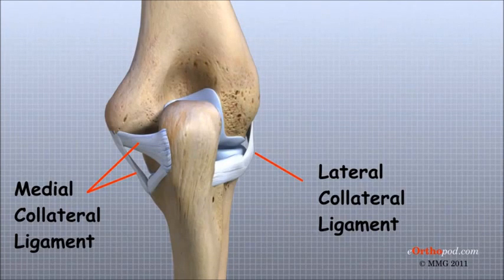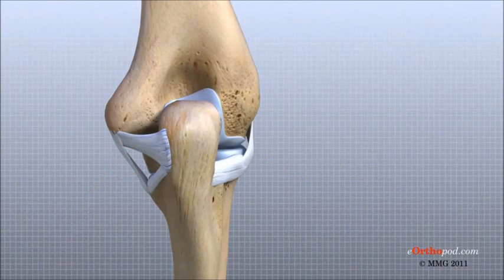They can be torn when there is an injury or dislocation to the elbow. If they do not heal correctly, the elbow can be too loose or unstable.